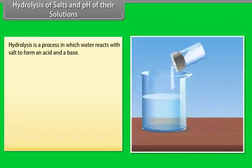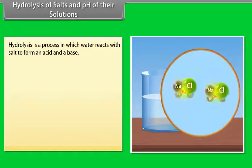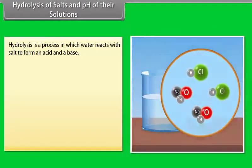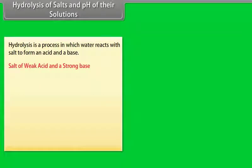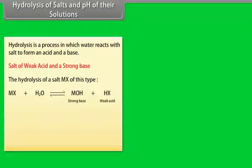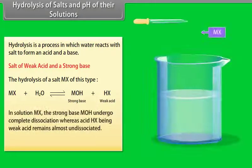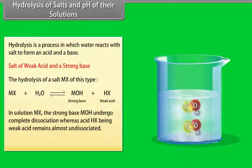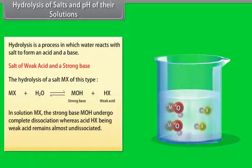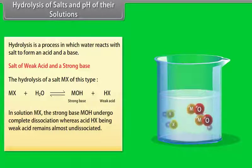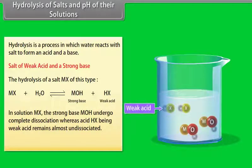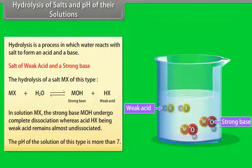Hydrolysis is a process in which water reacts with a salt to form an acid and a base. For a salt of a weak acid and a strong base: in solution, the strong base MOH undergoes complete dissociation whereas the weak acid HX remains almost undissociated. The pH of this type of solution is more than 7.